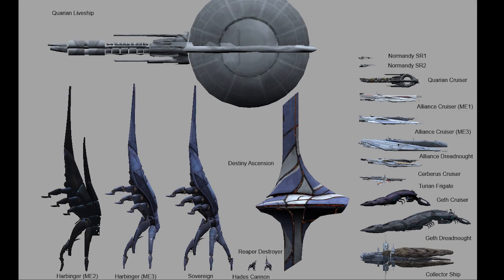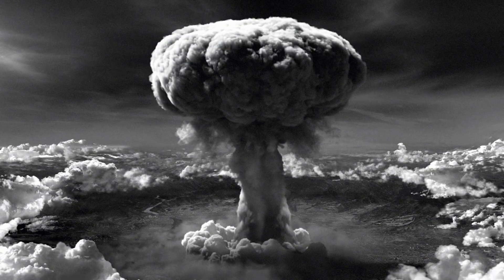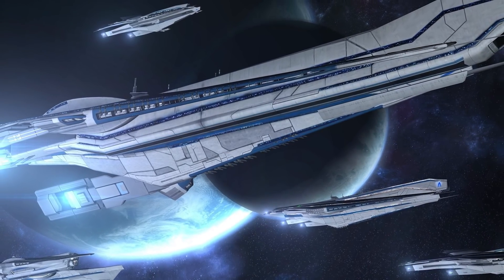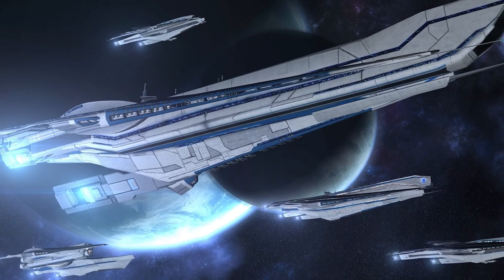A traditional dreadnought would be about 800 meters long, which equals about 2,600 feet. The mass accelerator gun that these ships possess is typically the same length as the ship, and one of this caliber would be able to launch a 20-kilogram hunk of metal to a velocity of about 1.3% the speed of light. This would create a kinetic energy equal to about two and a half times the energy released by a fission weapon like the one that destroyed Hiroshima during World War II. And a typical dreadnought can do this every five seconds.